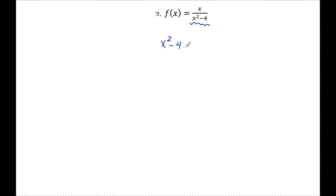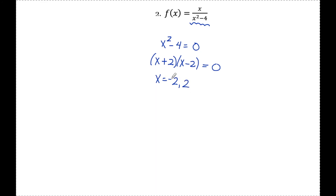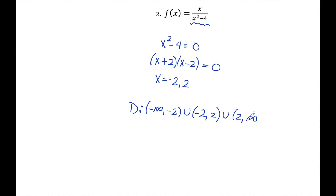Number two: x over x squared minus 4. Similar to the last example, I need to make sure the denominator is not equal to zero. I set it equal to zero and solve. Factoring gives me x plus 2 times x minus 2, so the denominator equals zero at negative 2 and positive 2. I need to exclude these values from my domain. In interval notation: negative infinity to negative 2, union negative 2 to 2, union 2 to infinity.